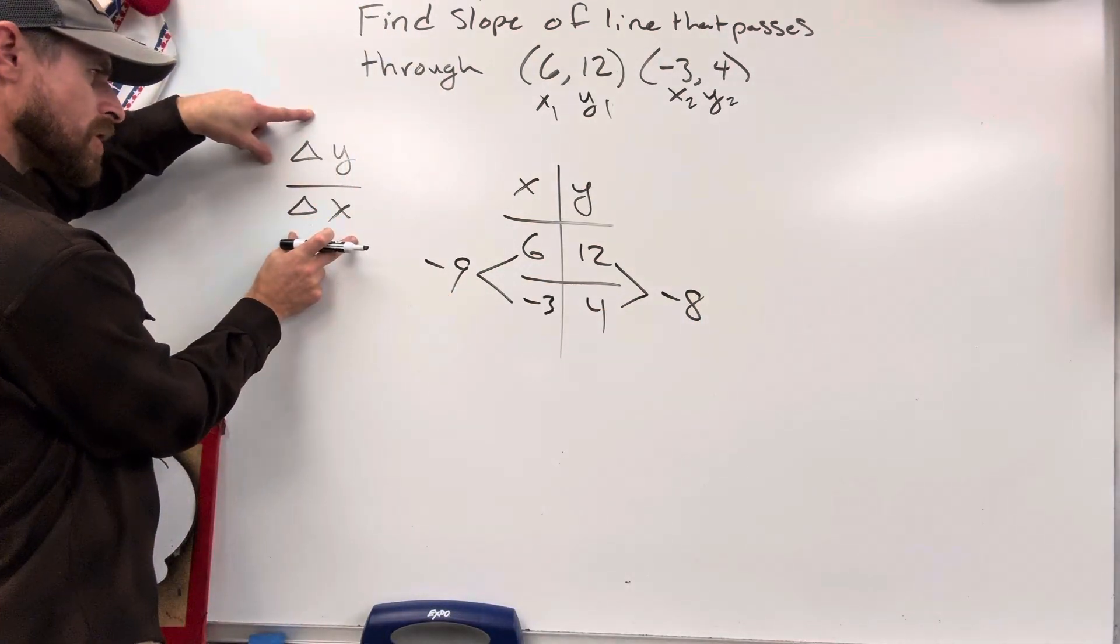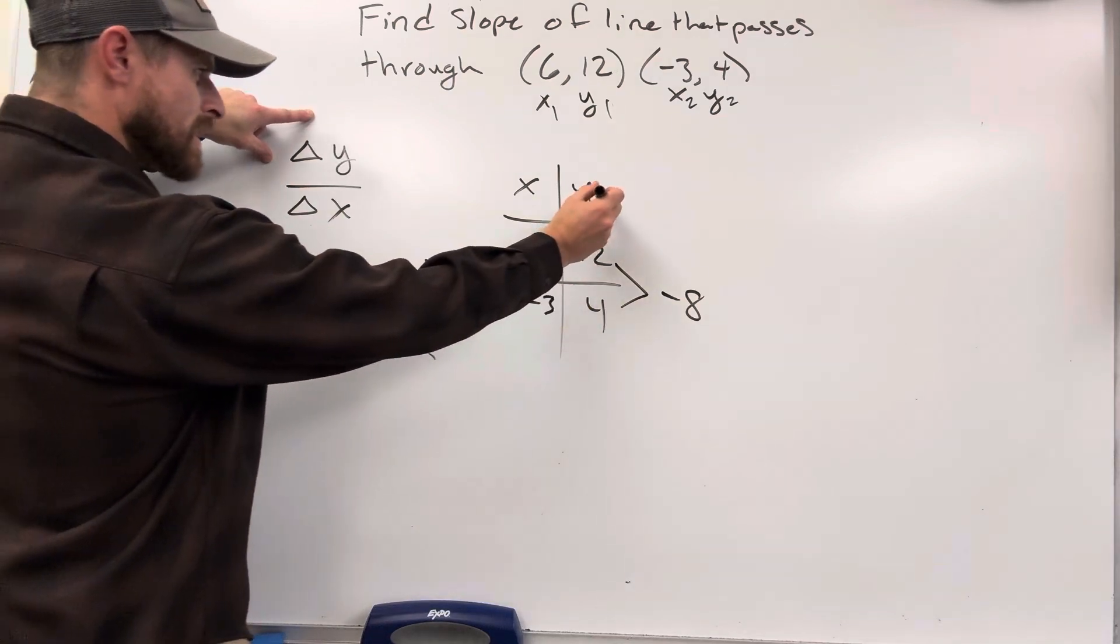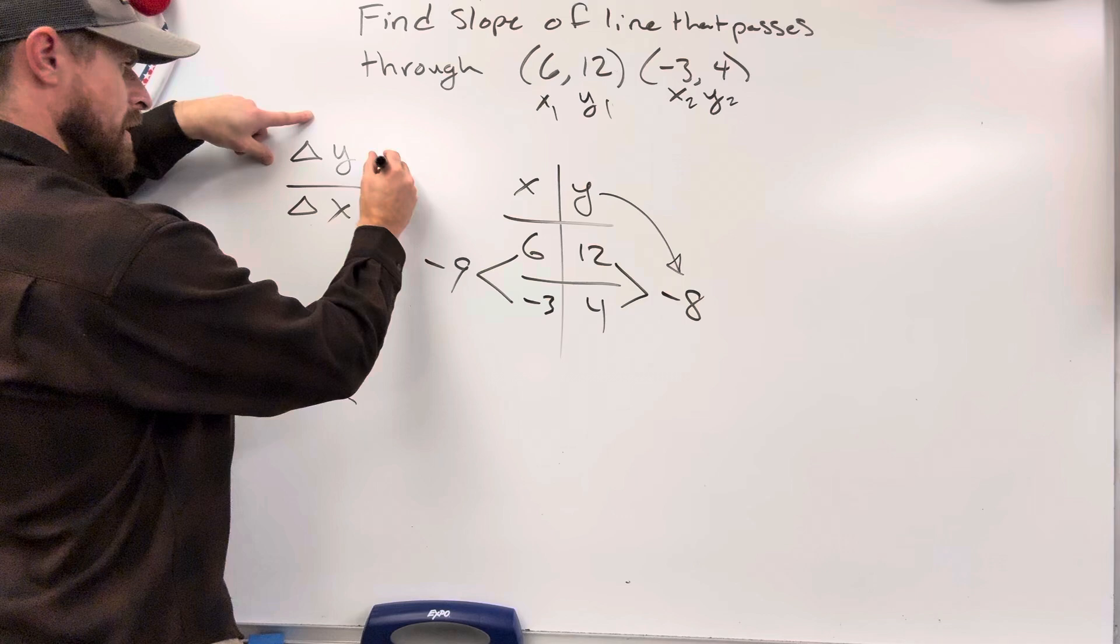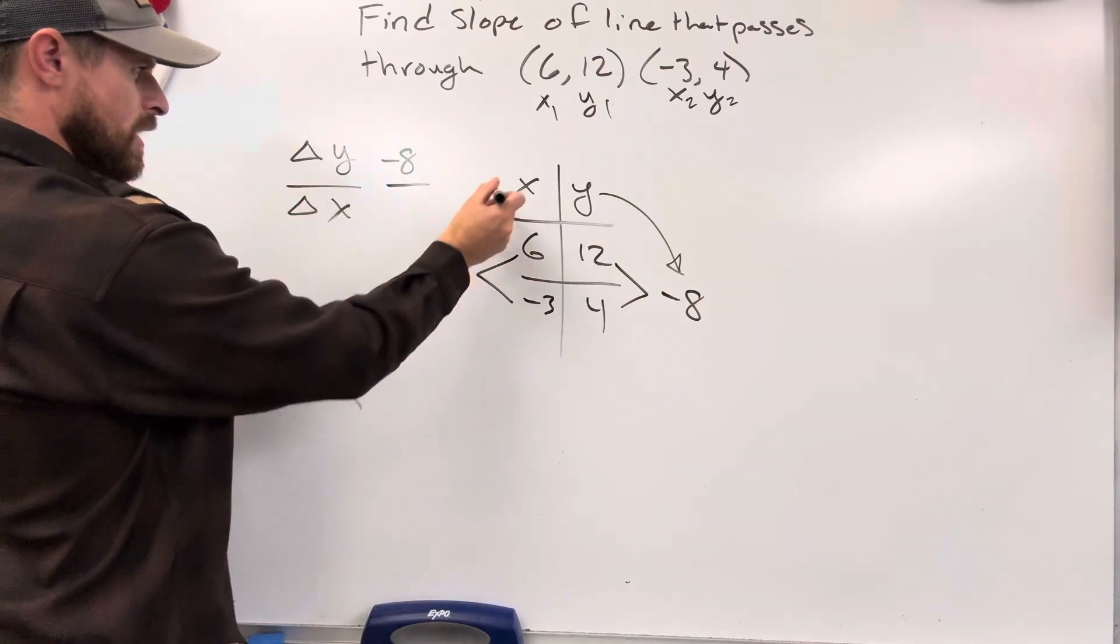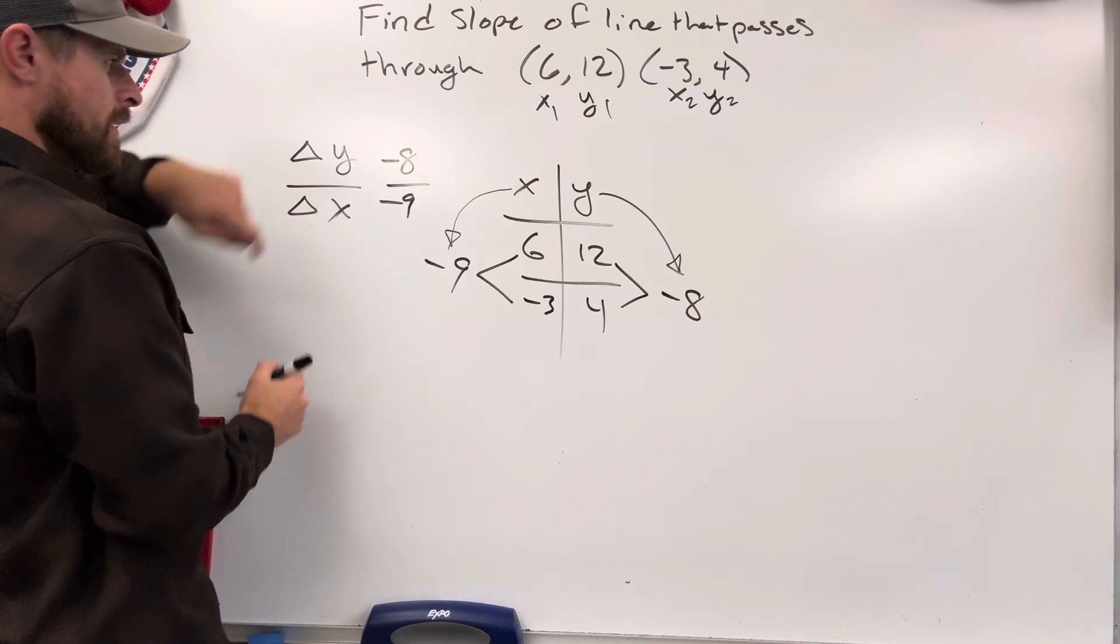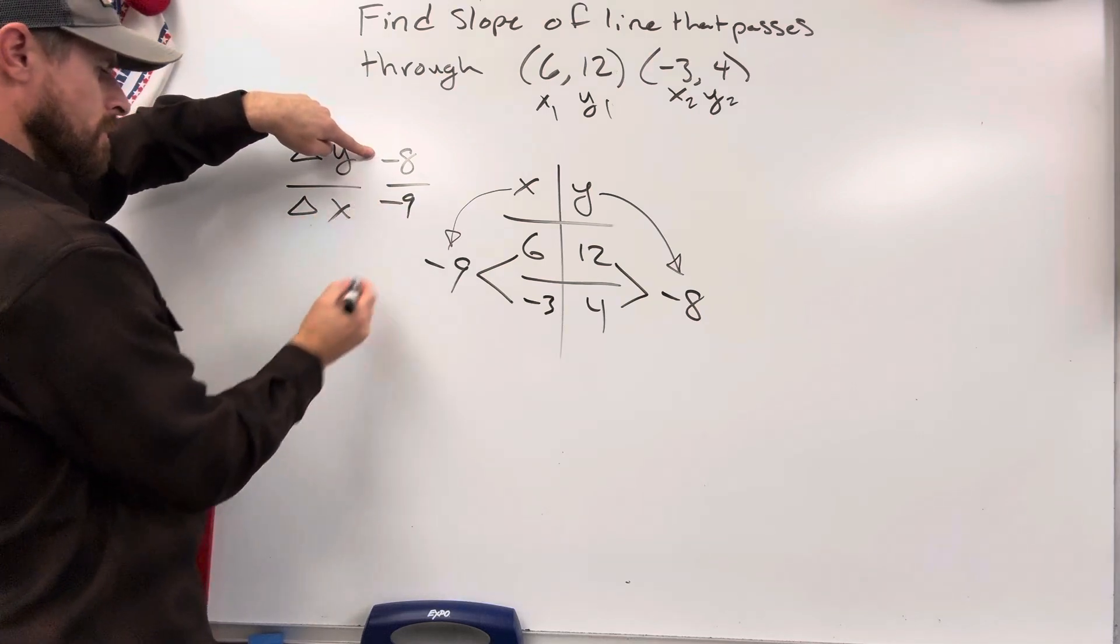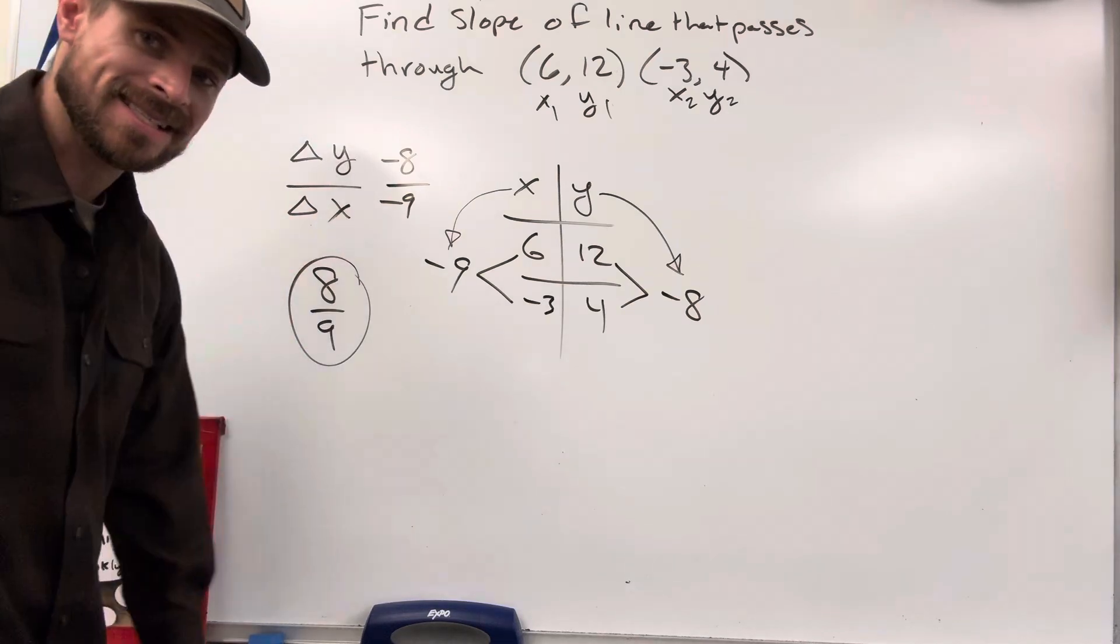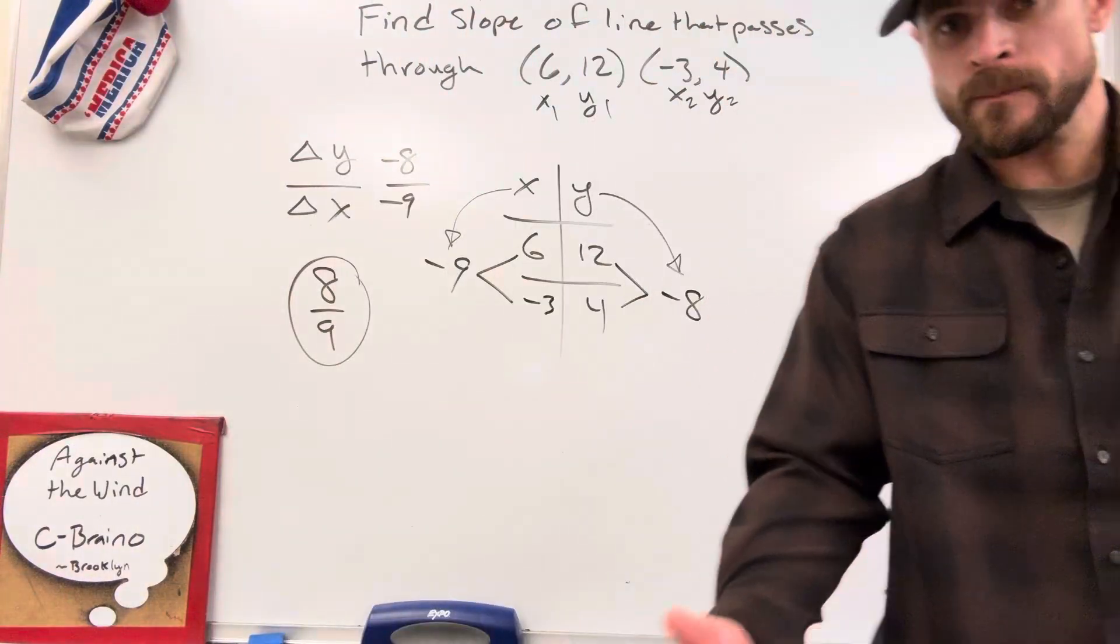Remember, slope is our change in y over our change in x. So what's my change in y values? Change in y is negative 8 over my change in x values, which is negative 9. Now, what's a negative divided by a negative? It's a positive. And what do you know? We ended up getting the exact same slope as we did by using the slope formula.